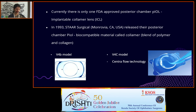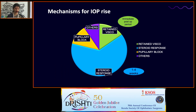The vaulting predisposes the eye to pupillary block glaucoma. To prevent this, a peripheral iridotomy is suggested before placing the V4B model. The latest V4C model features Centraflow technology with a 0.36 mm central aperture called the aquaport for aqueous flow, preventing pupillary block. Hence, peripheral iridotomy is not needed with this model. Mechanisms of IOP rise include steroid response, retained viscoelastic, and pupillary block.